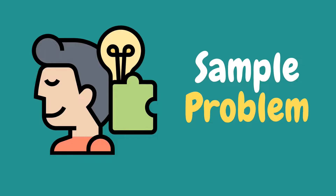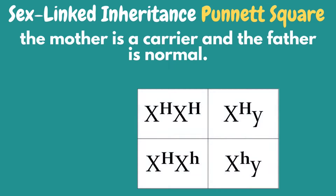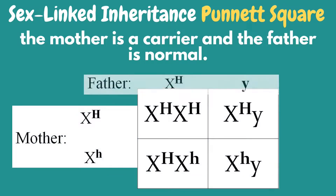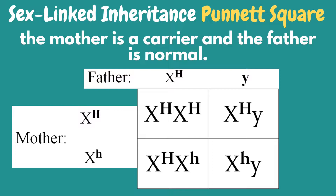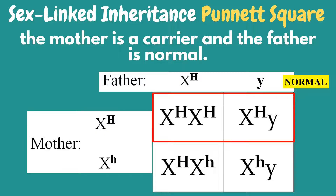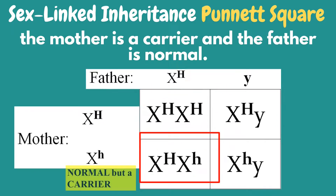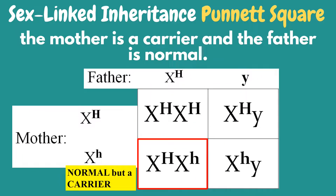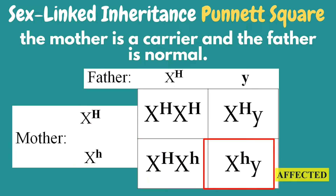Let's try to understand the concept of sex-linked traits using a Punnett square. The mother is a carrier and the father is normal. There is a 25% chance of having a normal female, another 25% of having a normal male, another 25% is a female carrier, and the last 25% is an affected male.